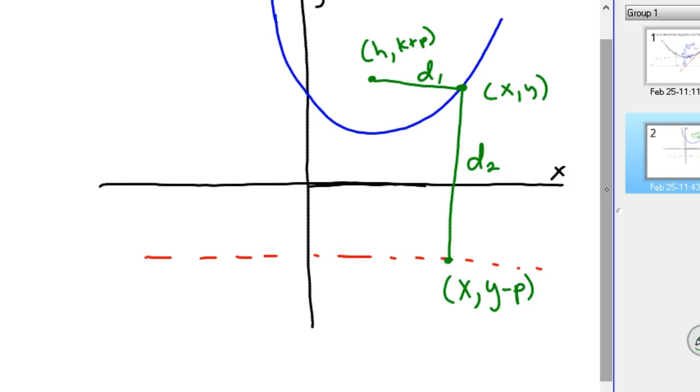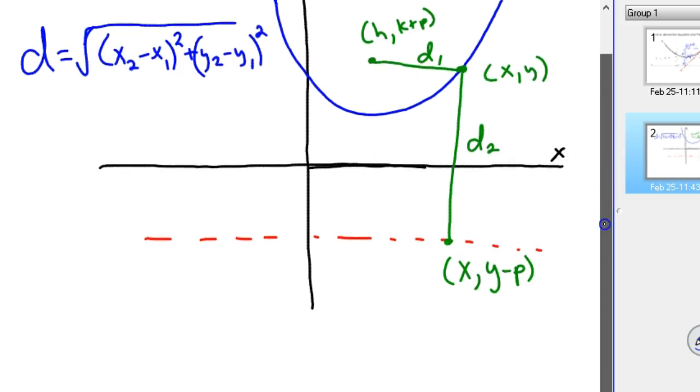We're going to use the distance formula. Distance formula is the square root of X2 minus X1 squared plus Y2 minus Y1 squared. So we're going to use that distance for both D1 and D2 generically with those points.